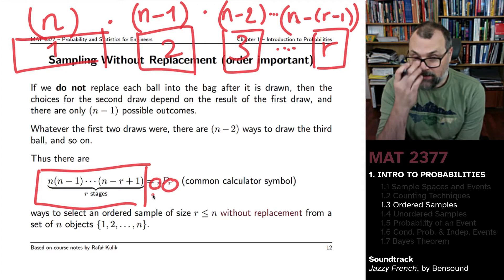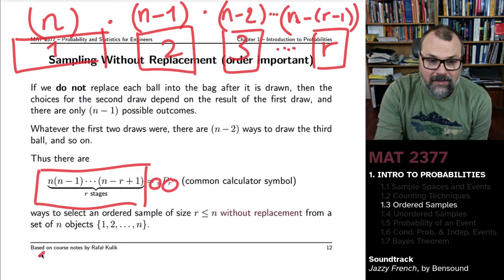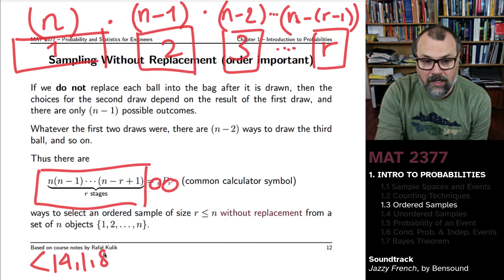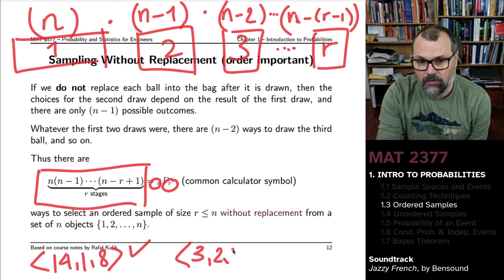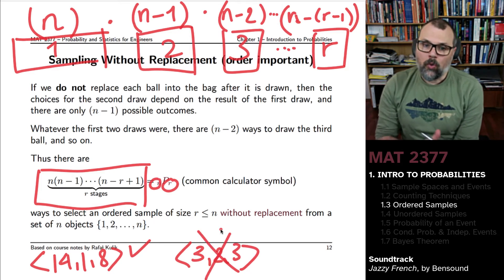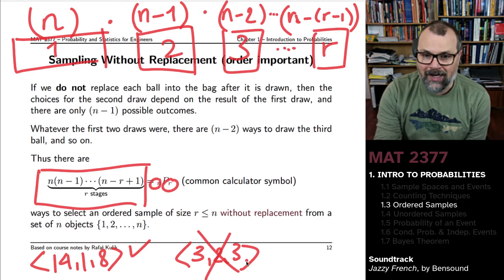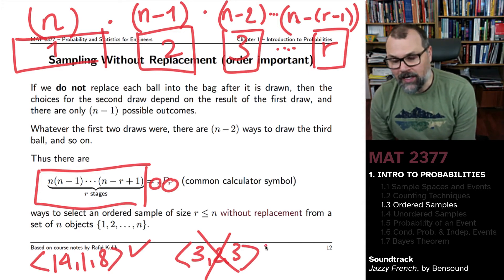So in this case, you might see something like 14, 1, 8. Yes, that's acceptable, but you couldn't see something like 2, 3, 2. That option is not open to you. Once you've drawn a 3, you cannot draw a 3 again in a later stage.